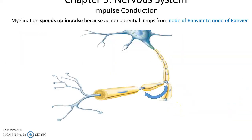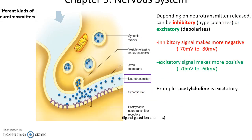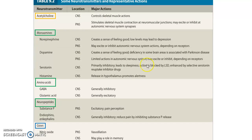Myelination helps to speed up the action potential, where it essentially jumps from node of Ranvier to node of Ranvier. Inhibitory neurotransmitters bind and make the membrane more negative — more hyperpolarized — while excitatory neurotransmitters make it more positive. You just need a balance between the two until threshold is reached to get an action potential. Various neurotransmitters include acetylcholine, neurotransmitters based on amino acids, partial amino acids, small chains of amino acids, and some gases.